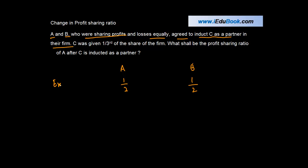This is known as the existing profit sharing ratio. Now both these guys agreed that let's get a new partner in called C, and C was given one third of the profits of the firm. Now after giving one third of the profits of the firm, the question is what shall be the profit sharing ratio of A after C is inducted as a partner?